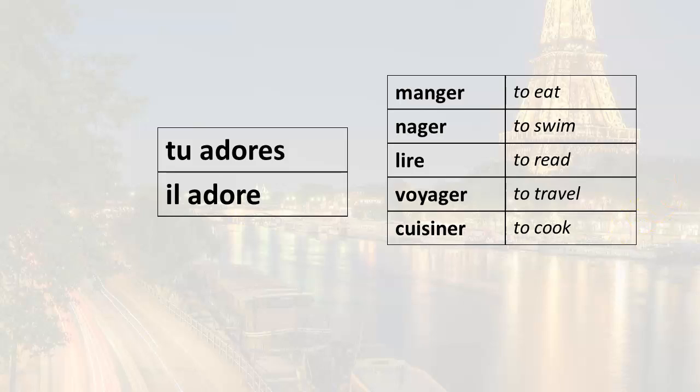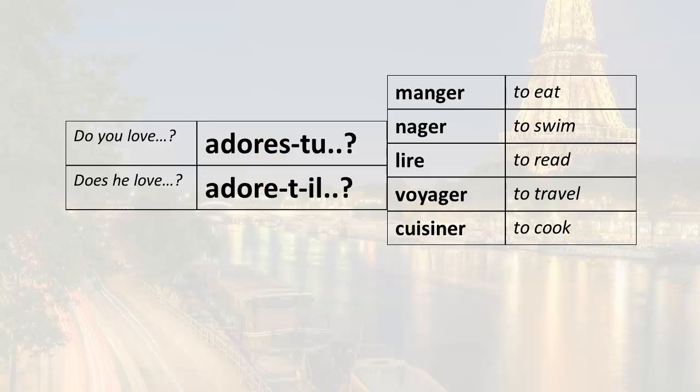If you want to ask a question, one way to make a question is to invert the verb form and the subject pronoun, so tu adores would become adores-tu. And remember, they're separated with a hyphen. So we would have for that one, adores-tu.